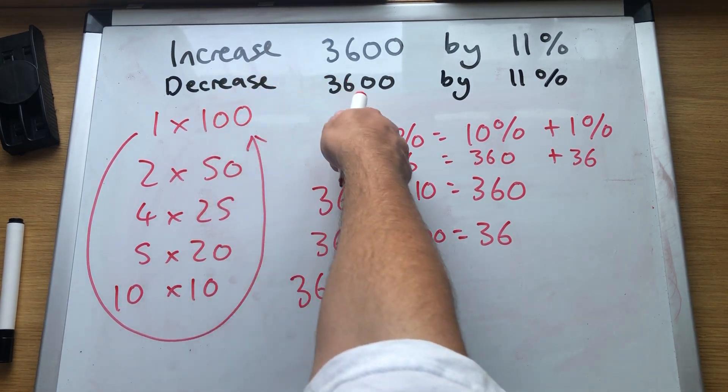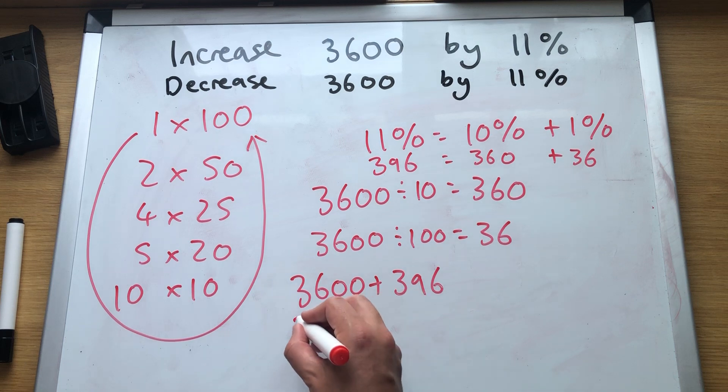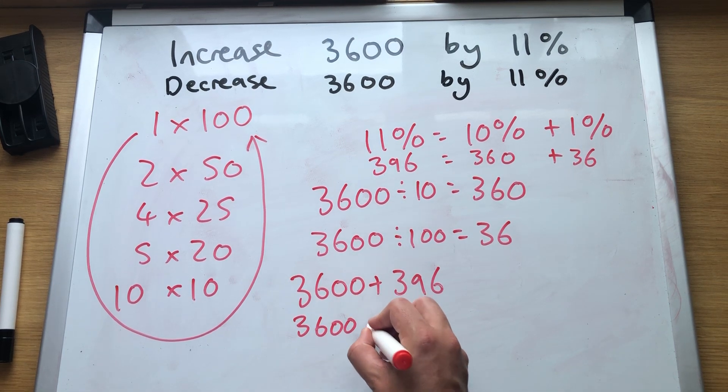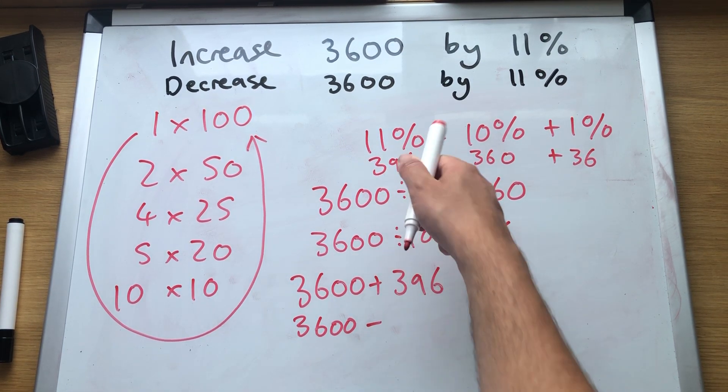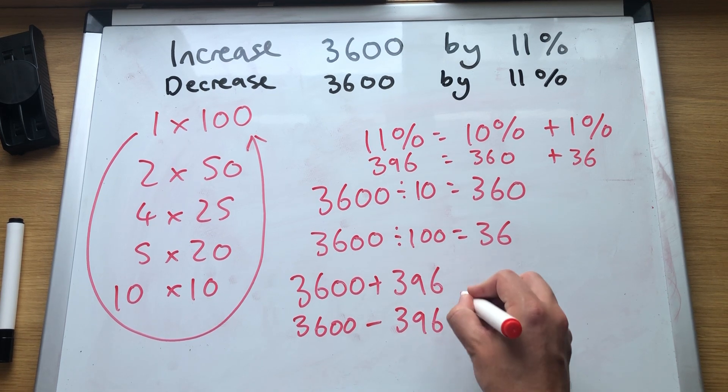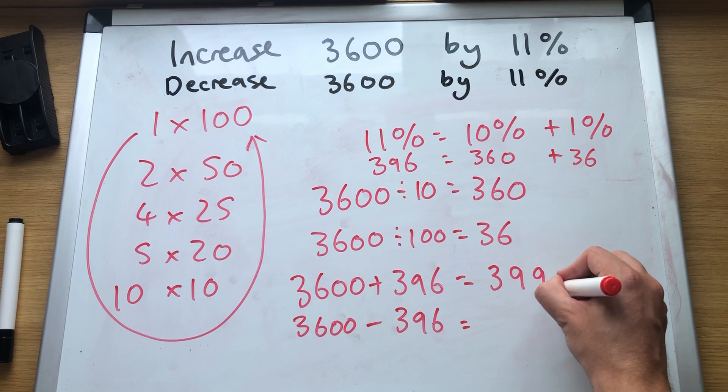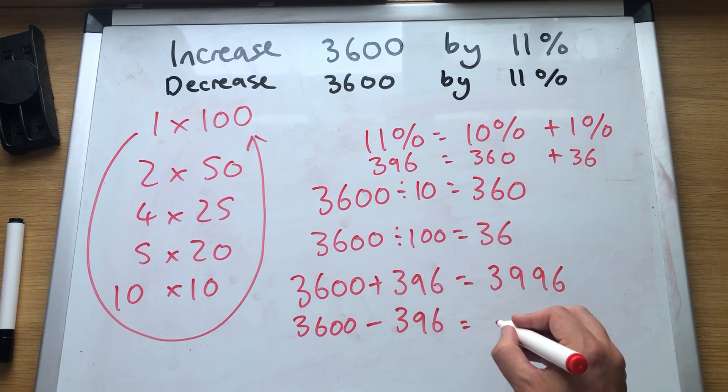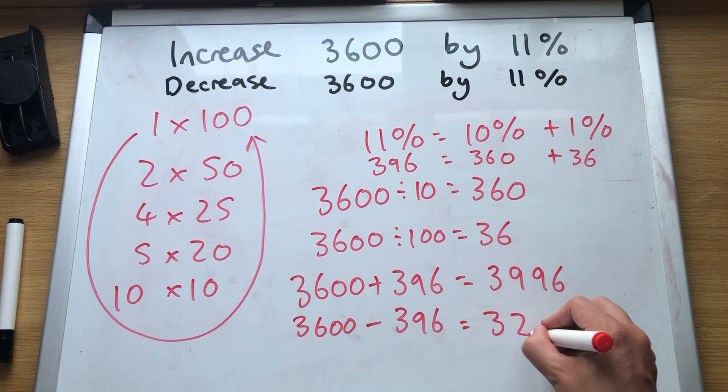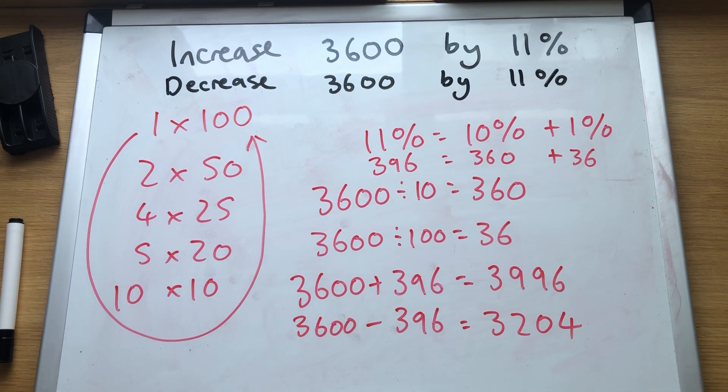And when we are decreasing 3600, take away 11%, 11% equals 396. So here 3,996. And this one here 3,204.